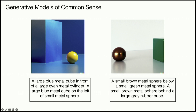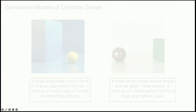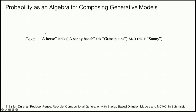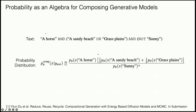One limitation of current models is that they don't have a good understanding of common sense. If you give these models a prompt like 'a large blue metal cube in front of a large cyan metal cylinder, and a large blue metal cube on the left of a small metal sphere,' they don't generate something sensible — they only generate two objects. One underlying issue is that they aren't compositional in nature and can't generate things very different from their training data. But actually, our work found it's relatively easy to make these models more compositional, because each model specifies a type of probability distribution — saying which images have high likelihood and which have low likelihood. You can compose different generative models together to generate very complicated, compositional text phrases.